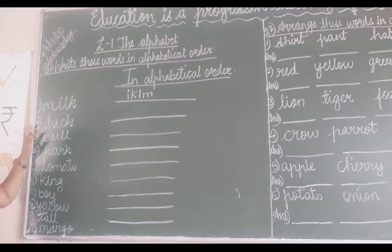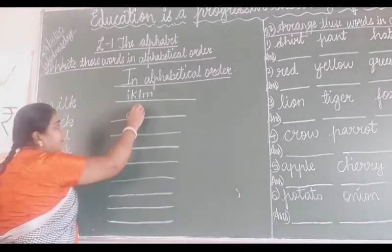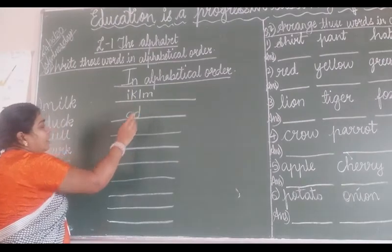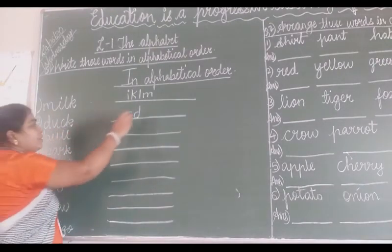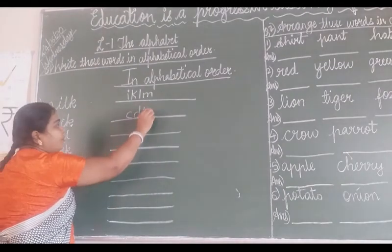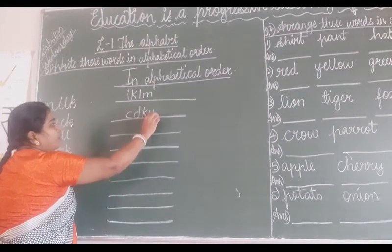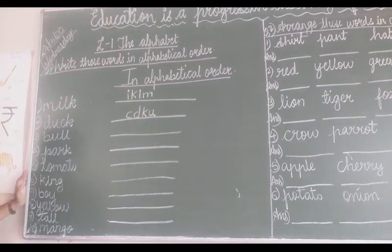Now second word is dove. We will say again: A, B, C - C comes here. Then D. E, F, G, H, I, J is not there. Then K is there, so K. And in last, which letter is given here? U. So you will write here U. So you have to arrange the word in this way.